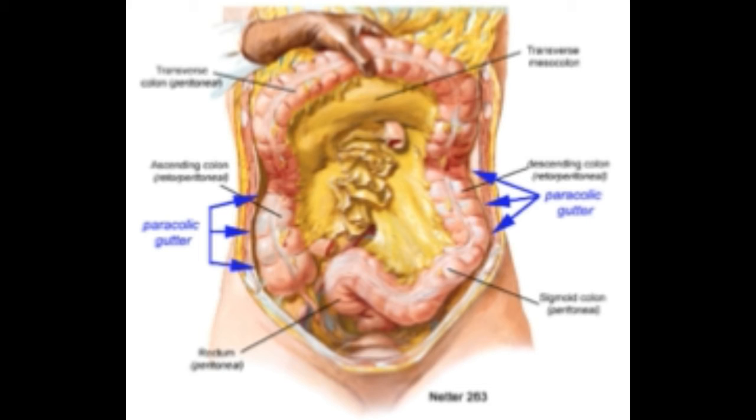The right paracolic gutter is continuous with the perisplenic space, or area around the spleen.